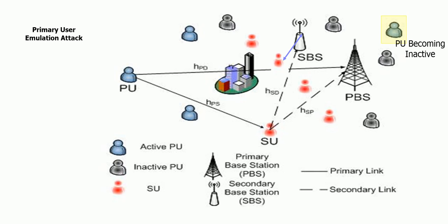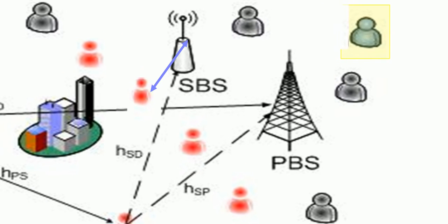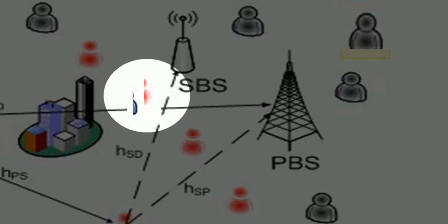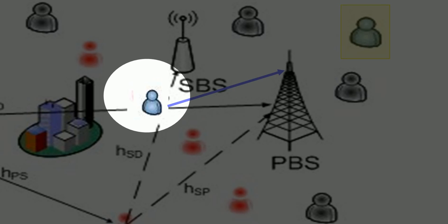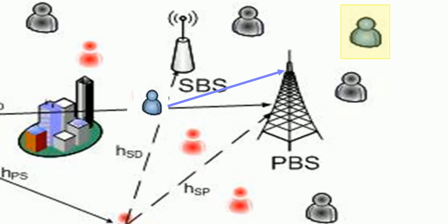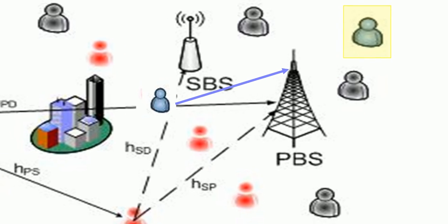There are two main categories of PUE attack. The first one is known as the selfish PUE attack. In a selfish primary user emulation attack, a selfish attacker aims at stealing the bandwidth from the legitimate secondary user for its own transmission. The attacker will monitor the spectrum, and once an unoccupied spectrum band is discovered, it will compete with the legitimate secondary users by emulating the primary signal.